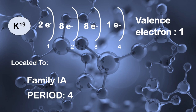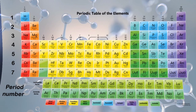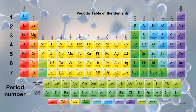Now, let us check if it is correct. The valence electron for potassium is 1, so vertically it is located at family 1A. And since potassium has 4 energy levels, it is located horizontally at period number 4.